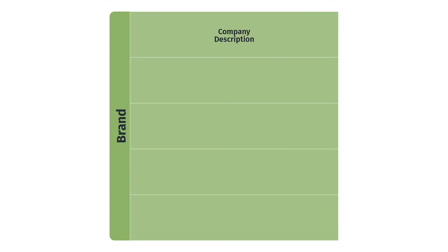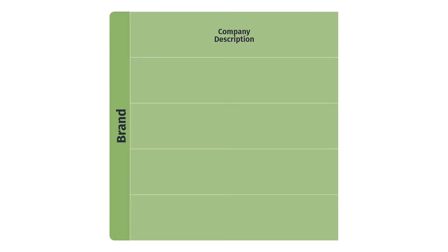So with the brand, we start with the company description — this is how you describe your company. Then we move on to the tagline, a catchphrase or slogan that you use to describe your company or product. The vision is an aspirational picture of the world in the future — with your product or service in it. The mission is how you're going to help make your vision a reality. And then the overall value proposition is the primary value statement describing the benefits of your brand or product.